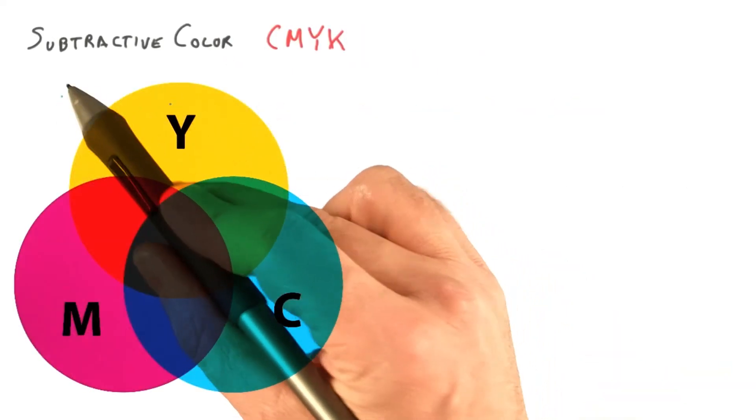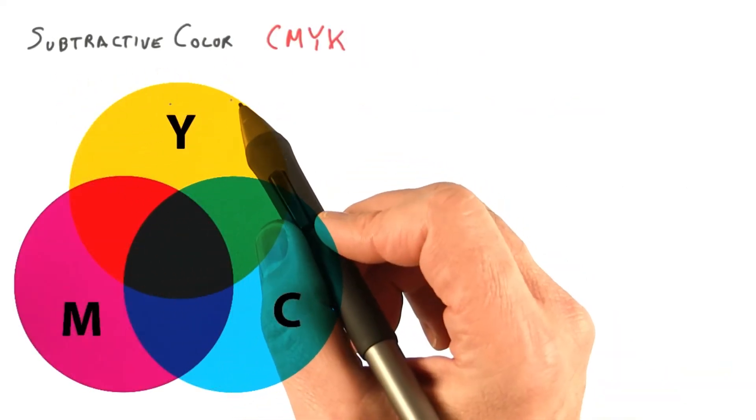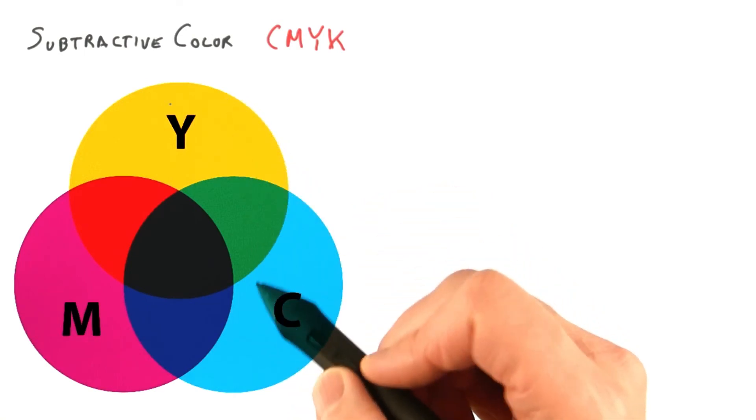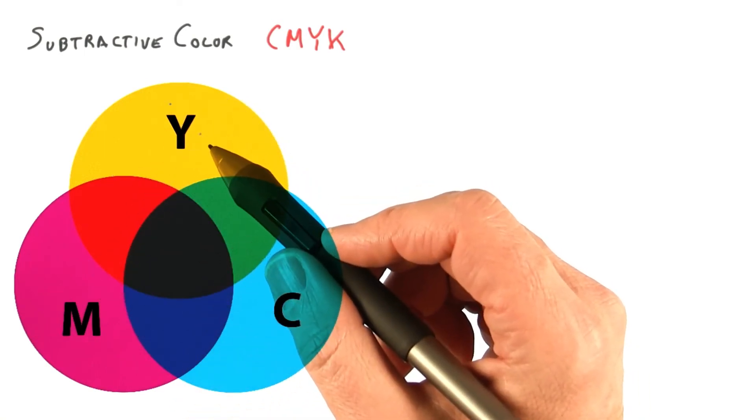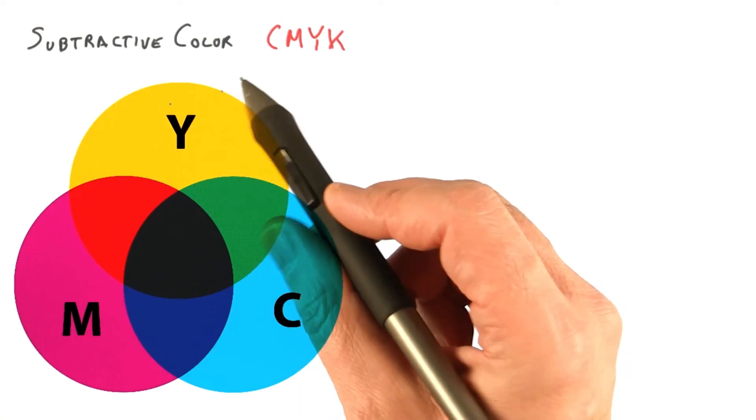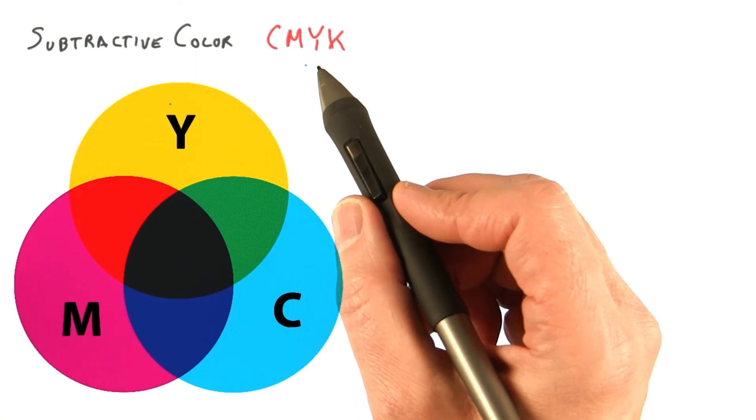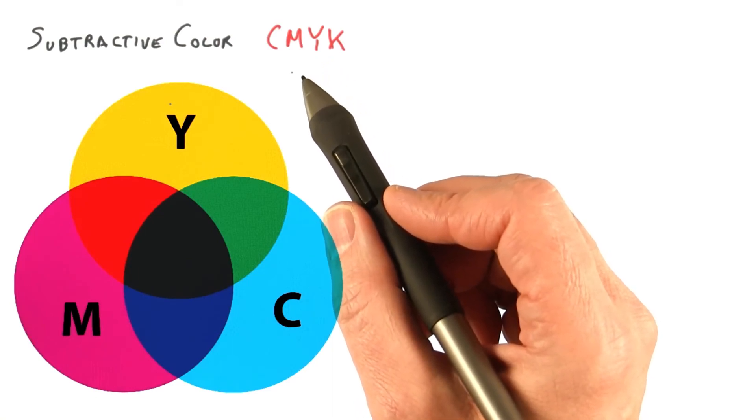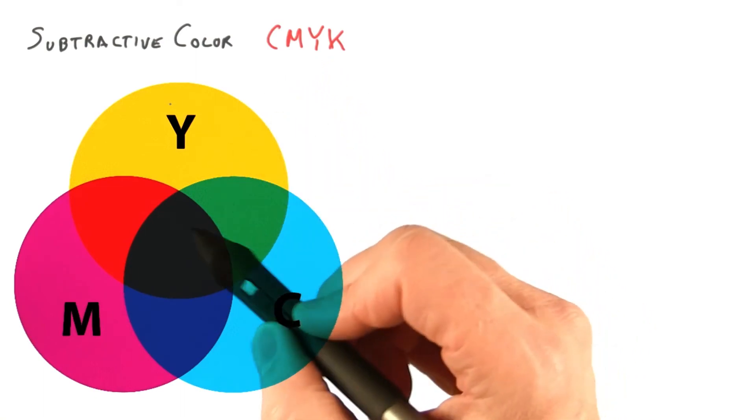The color model for mixing paints and inks is called subtractive color. The three primary colors used in printing are cyan, magenta, and yellow, with black added as its own dark ink. This printing system is called CMYK, with K standing for key and essentially meaning black. As different colors are mixed, the pigments become darker overall.